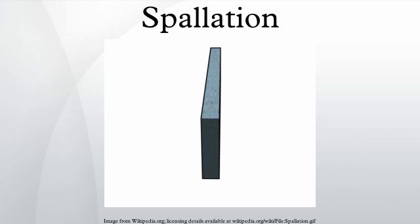In planetary physics, spallation describes meteoritic impacts on a planetary surface and the effects of a stellar wind on a planetary atmosphere. In the context of mining or geology, spallation can refer to pieces of rock breaking off a rock face due to the internal stresses in the rock.